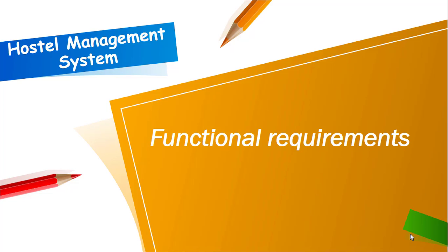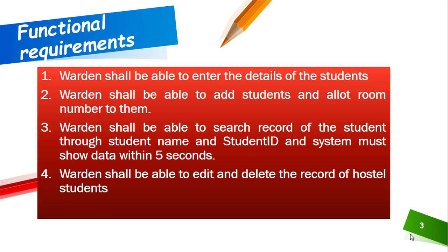First, I will discuss the functional requirements of the hostel management system. Functional requirements are those requirements that must be fulfilled by the system; without completion of these requirements, the system will be incomplete. The functional requirements of the hostel management system are as follows: the warden shall be able to enter the details of students, add students and allot them a room number, and search the record of any student through student name and student ID. The system must show data within five seconds.